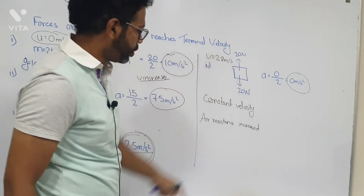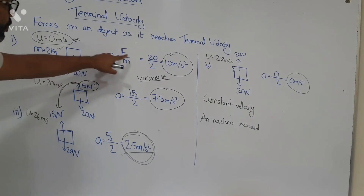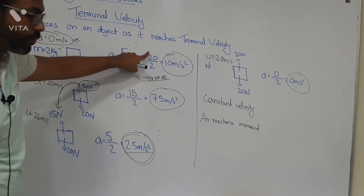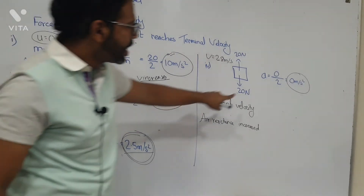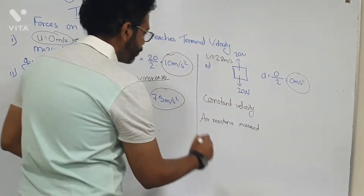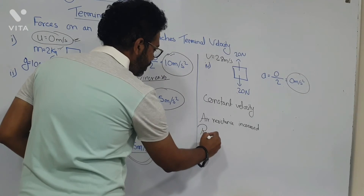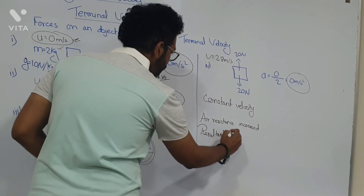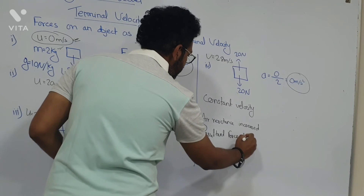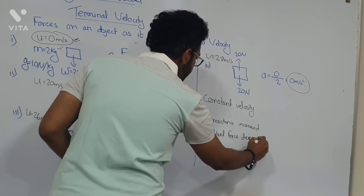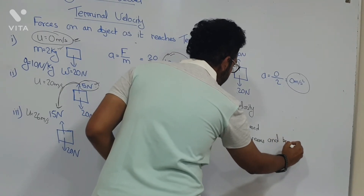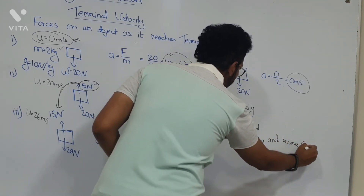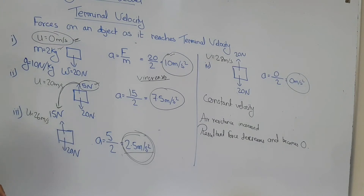So first, the resultant force was the weight of the object. Then it decreased, decreased further, and eventually it became zero. We can say the resultant force decreases and becomes zero.